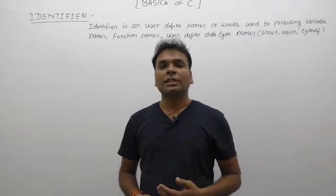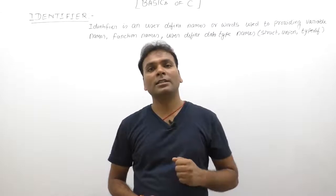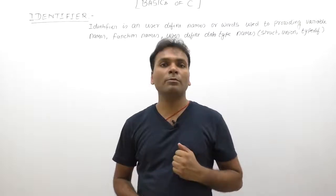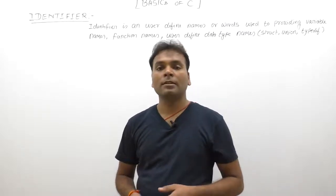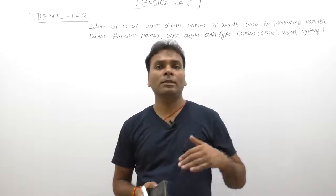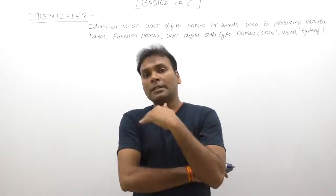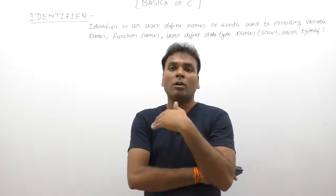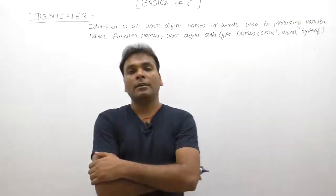In this session we are discussing identifiers in detail. As discussed in previous videos, in C programs there are two types of words: keywords and identifiers. Keywords are reserved words which are already defined in the C language - their meanings are already known to the compiler. Examples include int, float, while, for, and if.